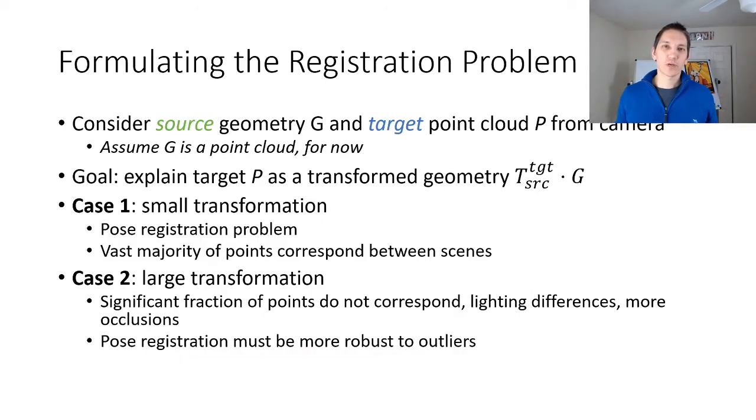Both object pose recognition and 3D mapping use what's known as a registration problem. The idea is that we have some sort of source geometry and a target geometry. Here the geometry in pose recognition will be the known geometry of the object. The target will be the point cloud from the camera. Let's assume for now g is a point cloud. The goal of registration is to explain what we see in the target p as a transformation of the geometry from the source to the target frame.